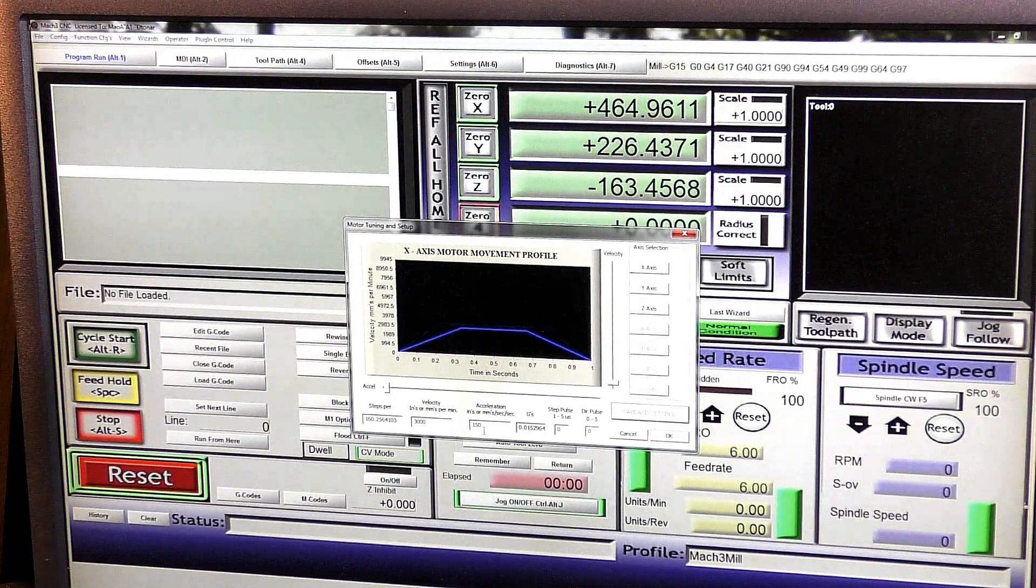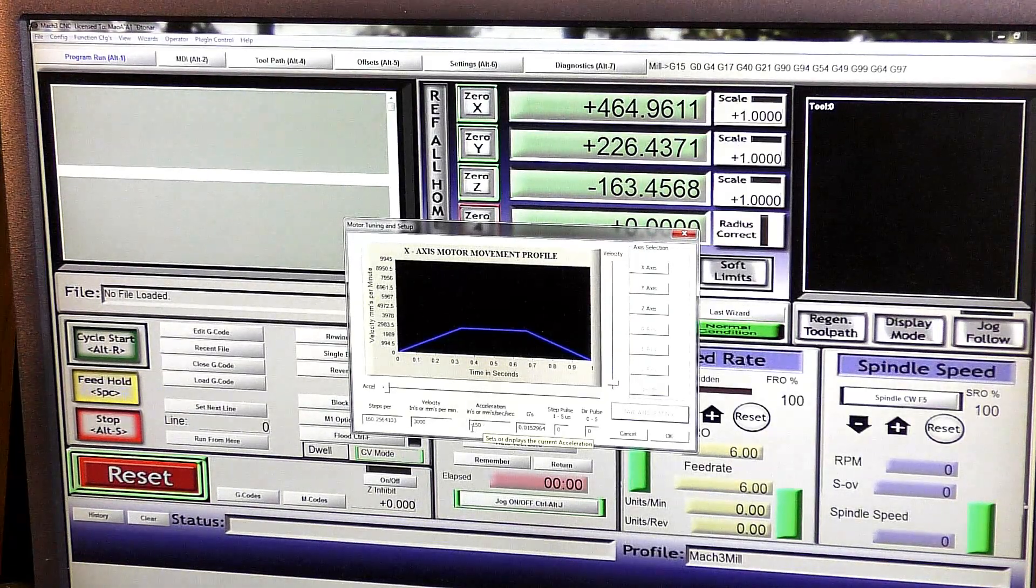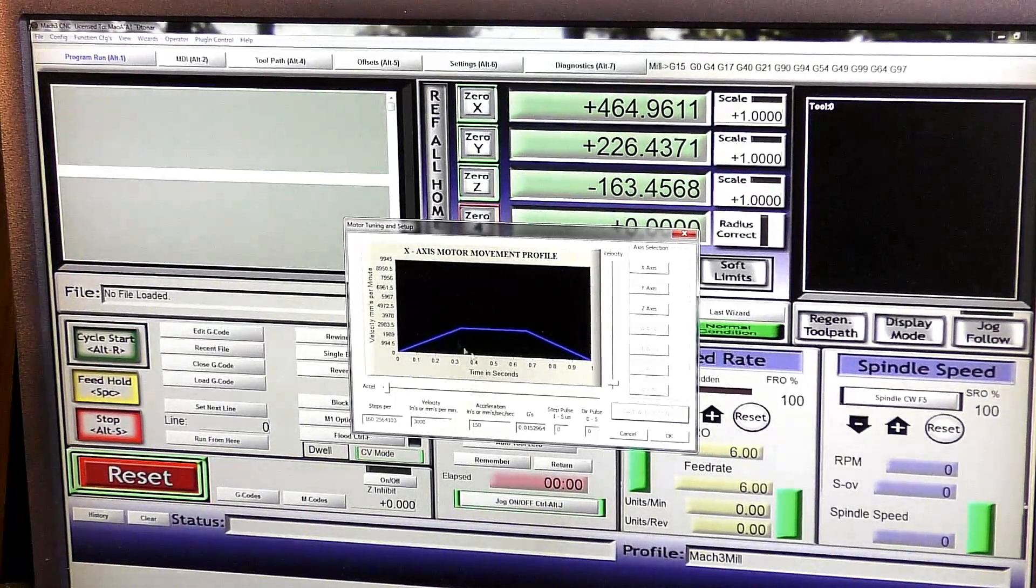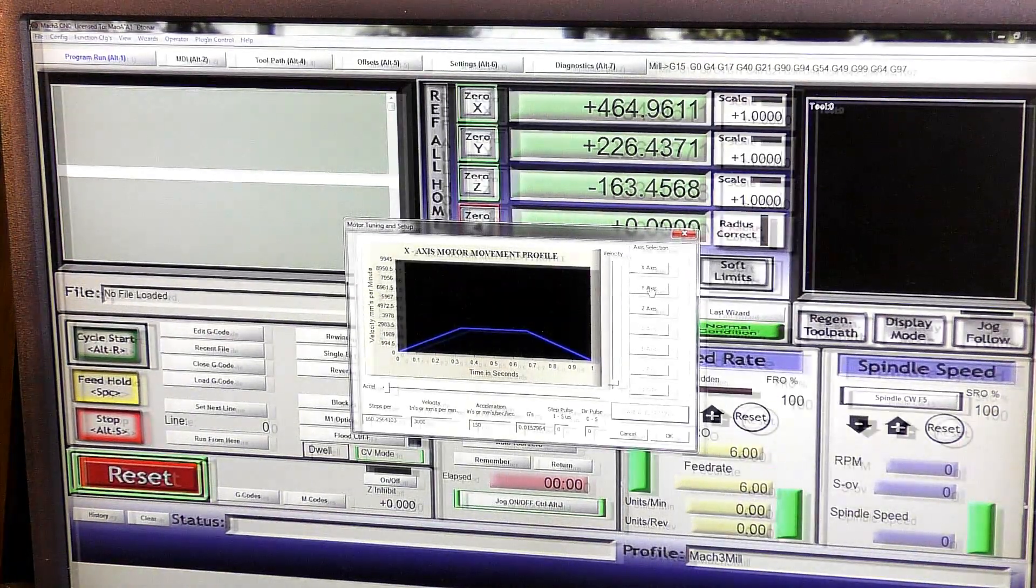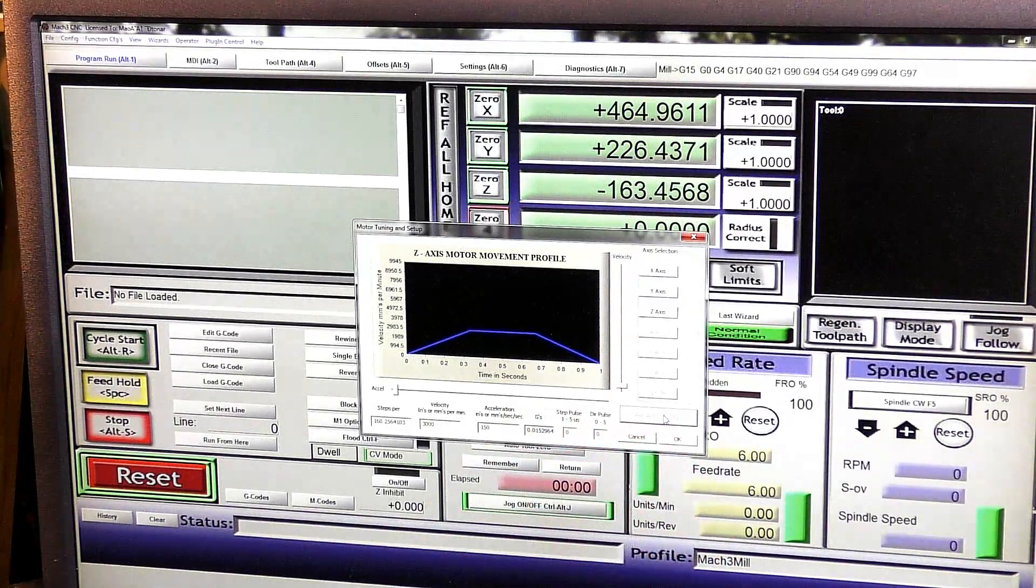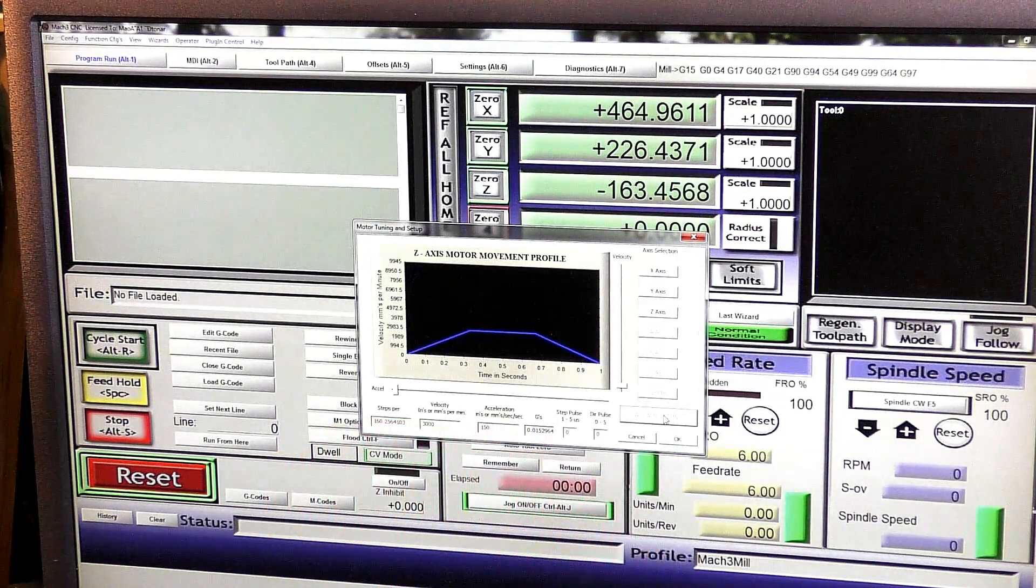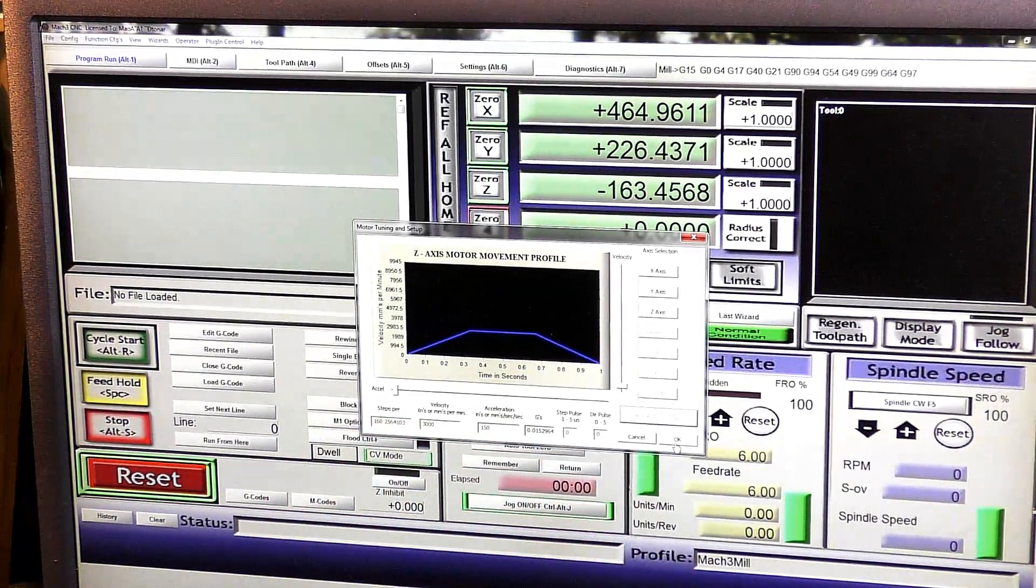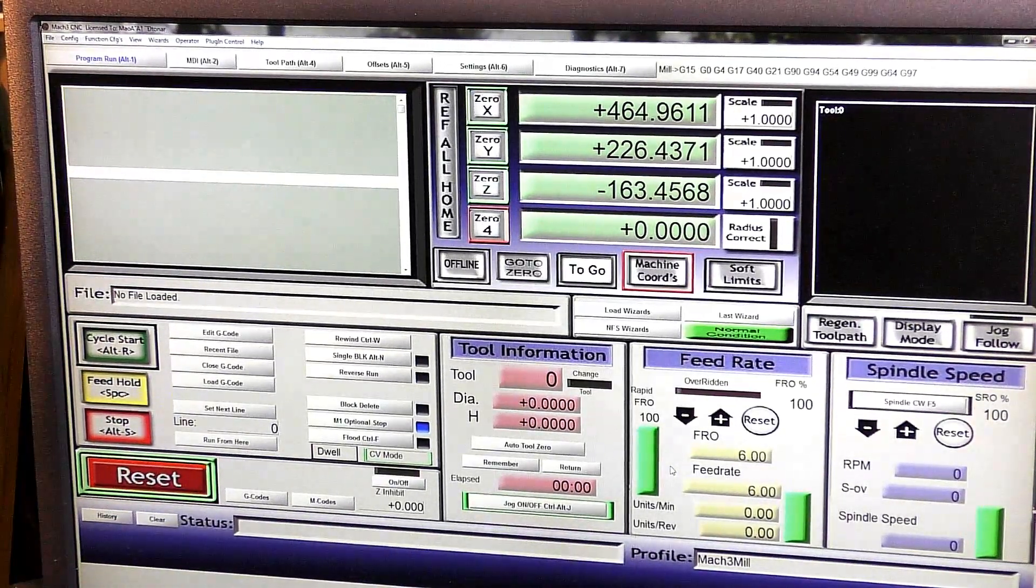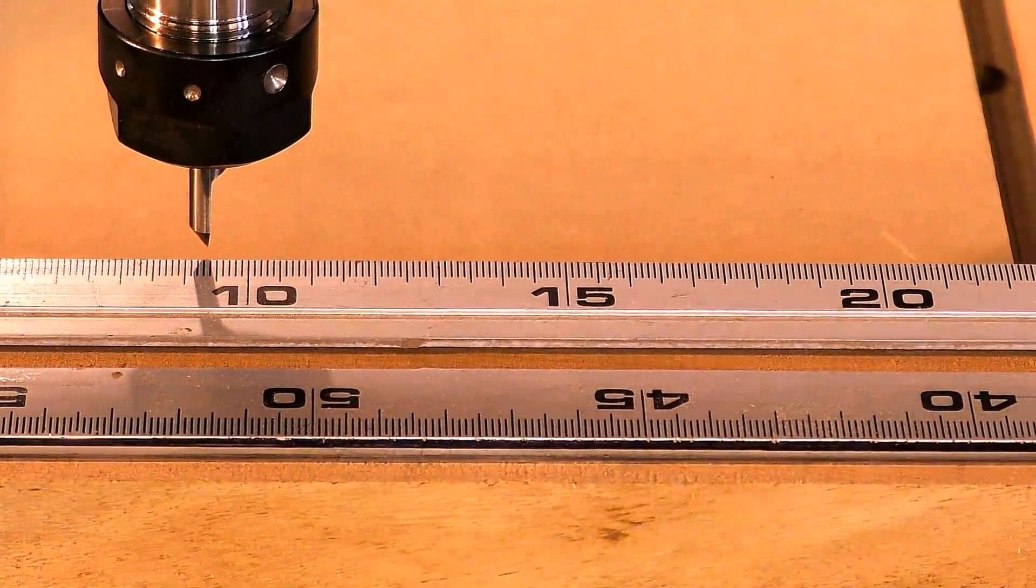The acceleration for the time being I'm going to leave at 150, so 150 millimeters per second per second. So that's the X axis done. It's important to press Save Axis Settings after each time you alter any figure, and press OK. This is the difference it makes in real time.